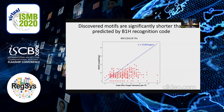But as you can see, the motifs are much shorter than what you would expect. So what would be the reason for this — why are the motifs shorter than you would expect on the basis of the zinc finger recognition code?